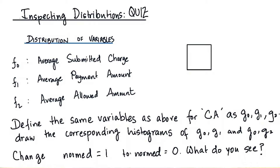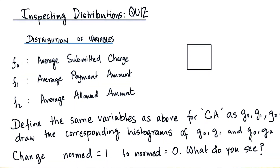Draw the corresponding histograms for G0 and G1, and G0 and G2. Change normed equals 1 to normed equals 0. What do you see?